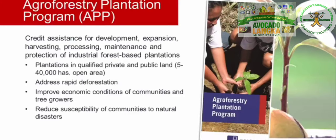The Agroforestry Plantation Program, or APP, is a credit assistance program for the development, expansion, harvesting, processing, maintenance, and protection of industrial forest-based plantations of species including fruit-bearing trees such as avocado and langka — the subject of this conference — as well as roundwood, fuelwood, bamboo, rattan, coffee, cacao, and rubber.